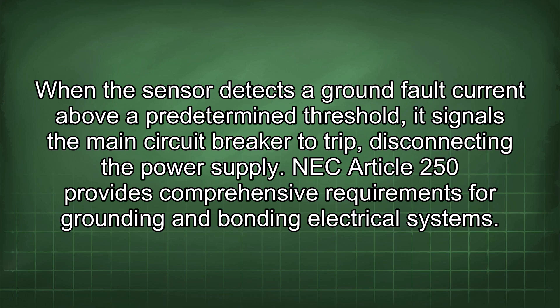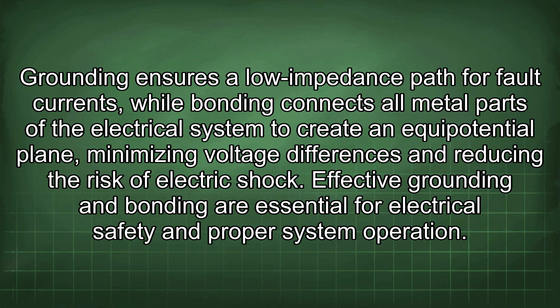NEC Article 250 provides comprehensive requirements for grounding and bonding electrical systems. Grounding ensures a low impedance path for fault currents, while bonding connects all metal parts of the electrical system to create an equipotential plane, minimizing voltage differences and reducing the risk of electric shock. Effective grounding and bonding are essential for electrical safety and proper system operation.